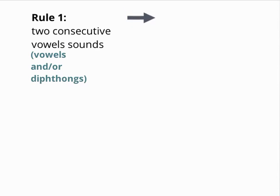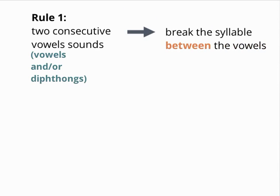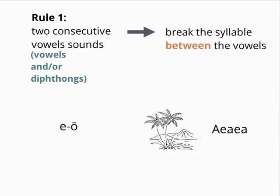In this case, the syllable break simply occurs between the vowels. For example, in the verb eo, the syllabification is e-o. The island of Aiaia, upon which Homeric Circe lived, would be split up into syllables as: I - I - ah.